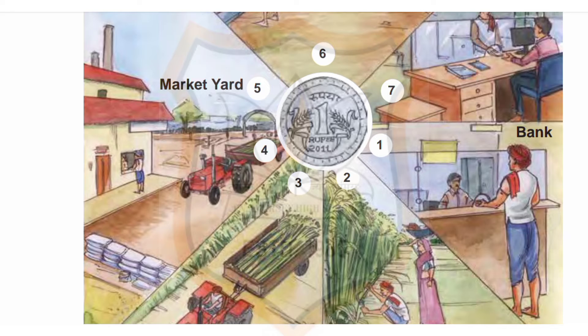What is an economic activity? An activity that involves producing and selling goods or services is called an economic activity. For example, a farmer who produces crops and sells them in the market is doing an economic activity.